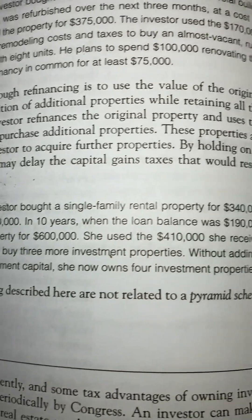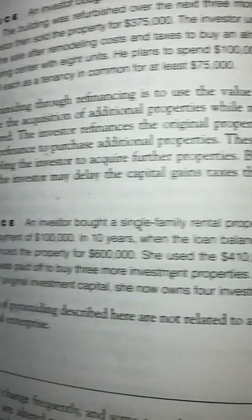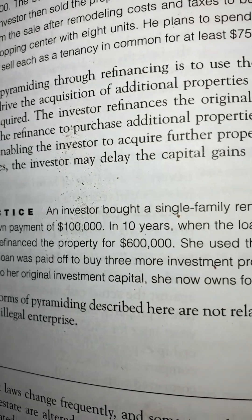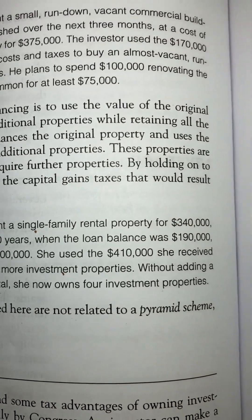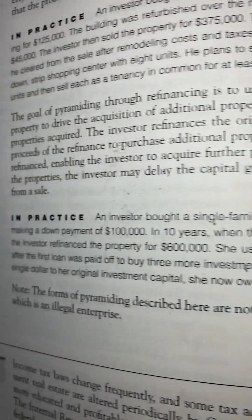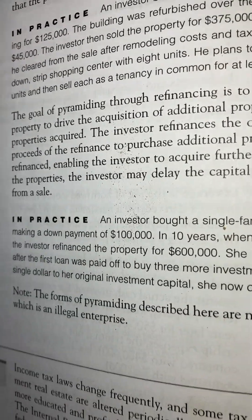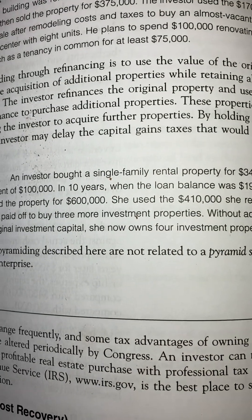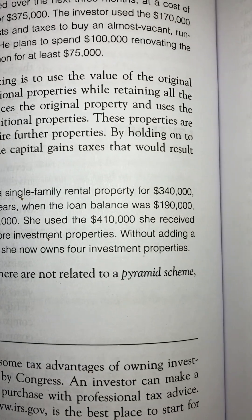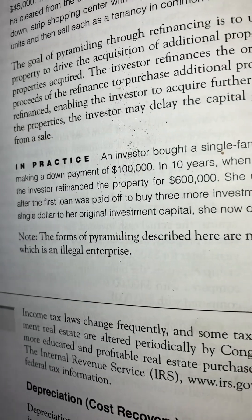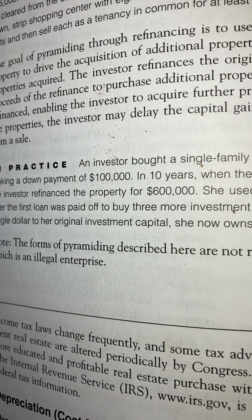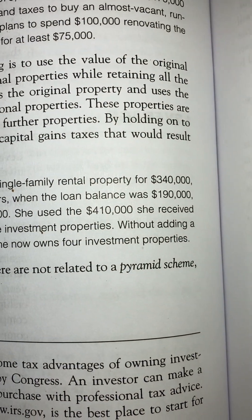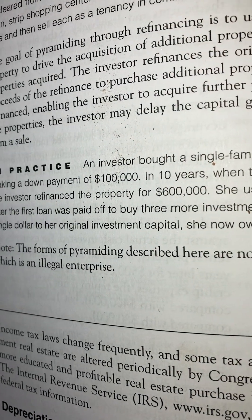In practice, an investor bought a single-family rental property for $340,000, making a down payment of $100,000. Ten years later, when the loan balance was $190,000, the investor refinanced the property for $600,000. She used the $410,000 she received after the first loan was paid off to buy three more investment properties.